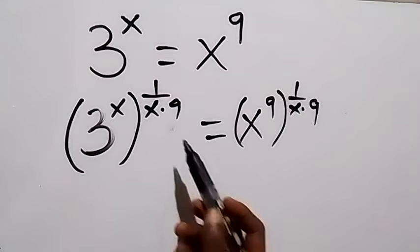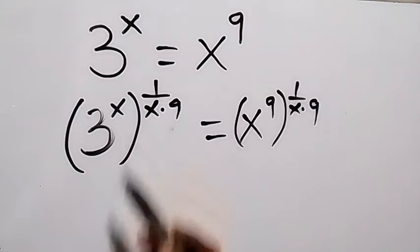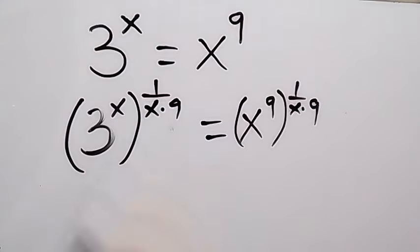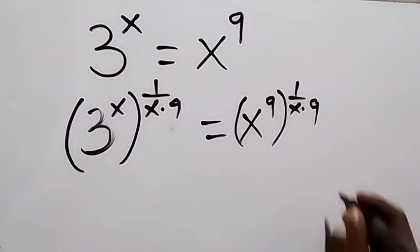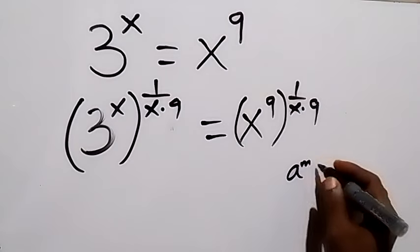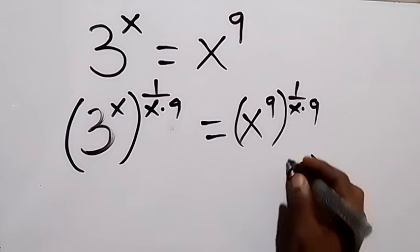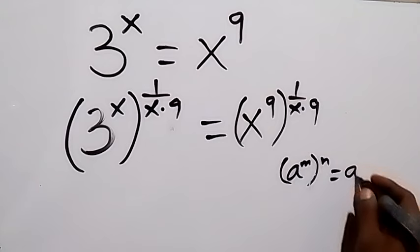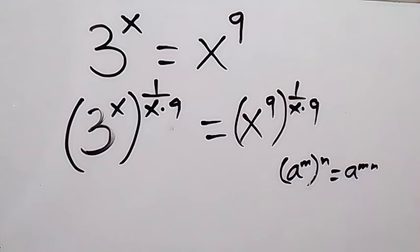It gives us x raised to power 9, then multiply by 1 over x times 9. We have multiplied both powers by that. Then this power multiplies — from the law of indices, when we have a raised to power m, then raised to power n, this can be written as a raised to power mn. From the law of indices, by the time we apply that here, we have: